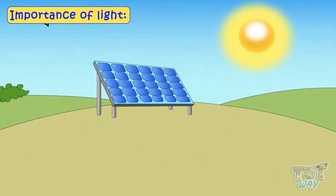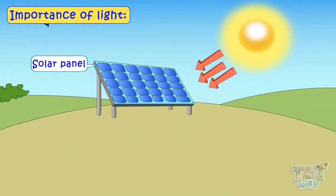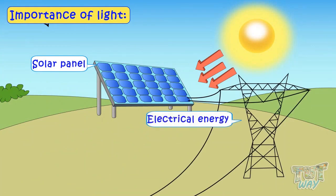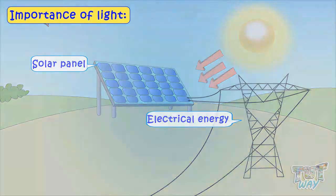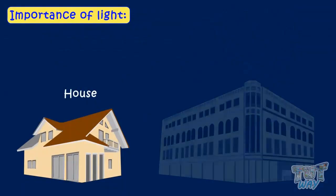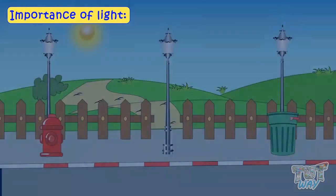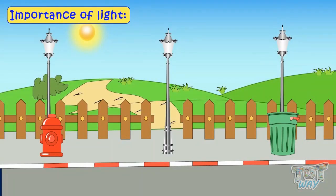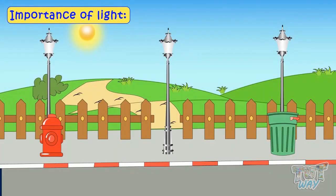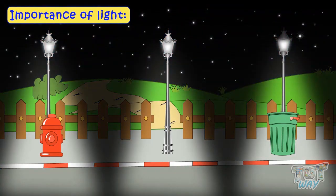At some places, light energy from the sun — or solar energy — is converted to electrical energy, and this energy is then used to light up our homes and houses. Our life depends a lot on light, as we can't see anything in the dark. In the daytime, we use natural light, and in the evening or night, we use artificial lights.